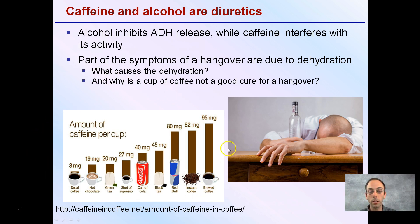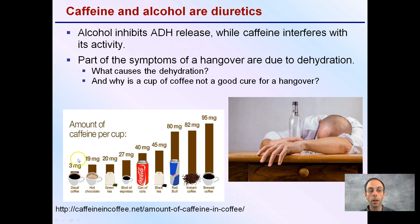Looking at some items here, we have brewed coffee having the highest amount of caffeine per cup, followed by instant coffee, Red Bull, black tea, can of cola, shot of espresso, and green tea in decreasing order. Decaffeinated coffee still does not contain zero caffeine — it contains less, but it's not completely eliminated.